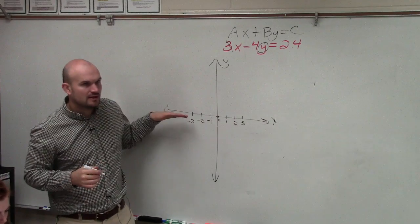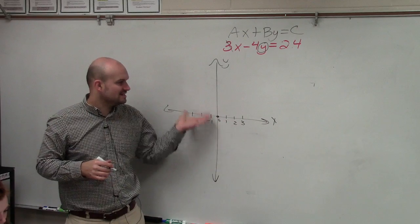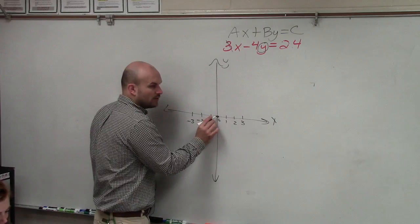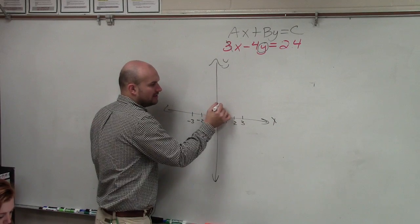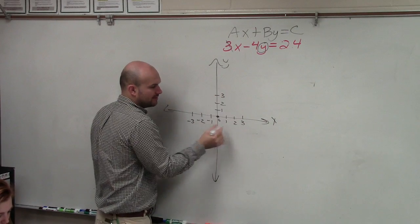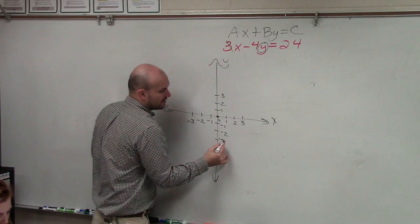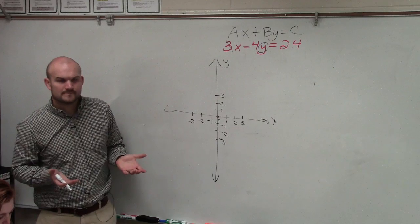And then to produce the y-axis, that is just a vertical number line where here is 0, 1, 2, 3, negative 1, negative 2, negative 3. Does everybody understand that?